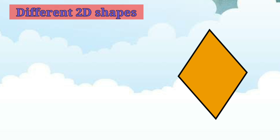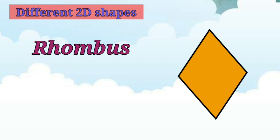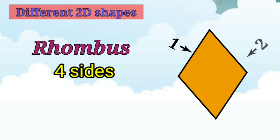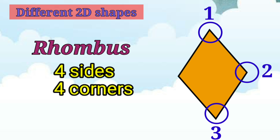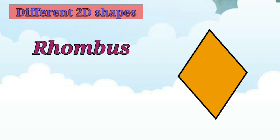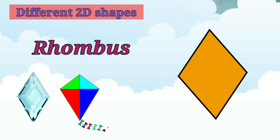Children, what shape is this? It is a rhombus. A rhombus also has 4 sides — 1, 2, 3, 4 — and 4 corners — 1, 2, 3, 4. Examples of a rhombus are a diamond and a kite.